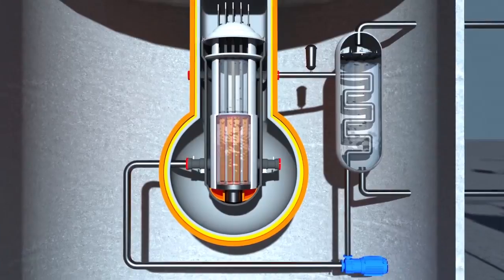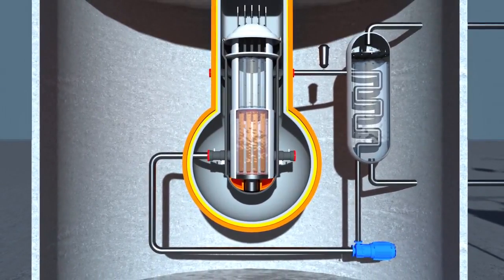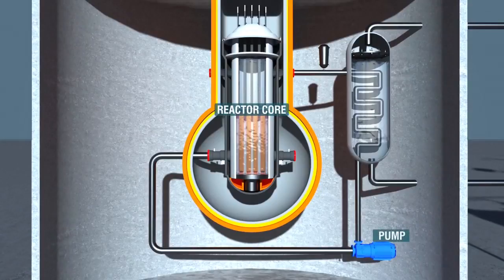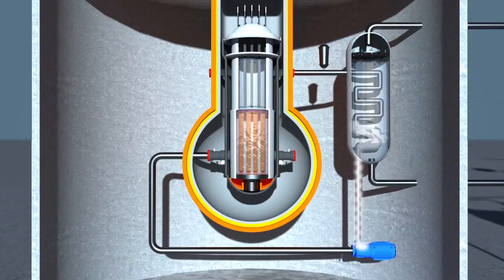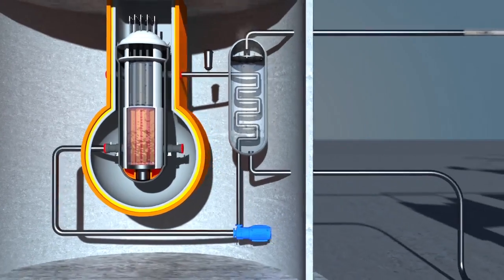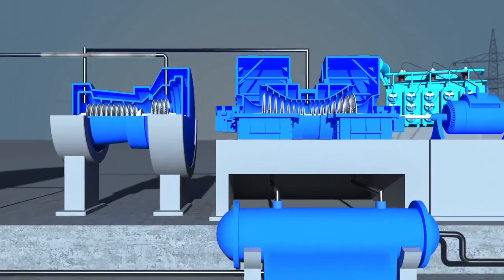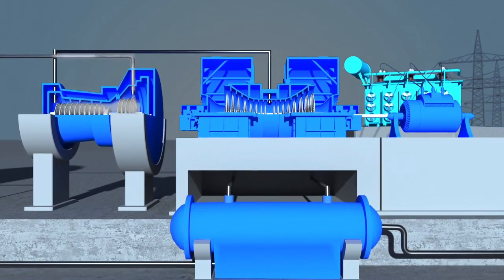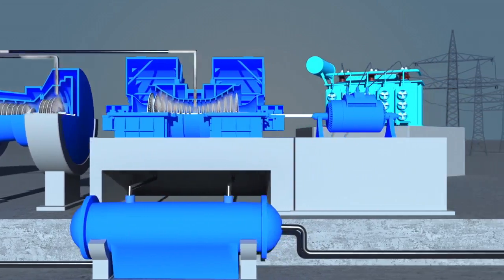Now that we have understood the various elements of the nuclear reactor, let us see the entire operations. Nuclear reactor consists of a reactor core, pump, and the heat exchanger. Due to the enormous amount of heat produced and released during the fission process, surrounding water gets heated up and changes into steam. This steam turns the turbine, thereby starting the generator, which produces electricity, lighting up our world.